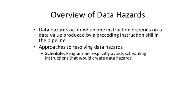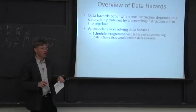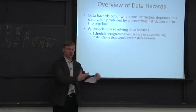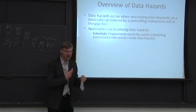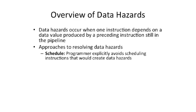First, you can schedule around it. If the processor pipeline is generating values and one instruction is dependent on another but the first instruction takes a couple cycles to generate its value, you can introduce no-operation instructions into your instruction sequence and have the programmer avoid the hazard if they know the microarchitecture of the machine.